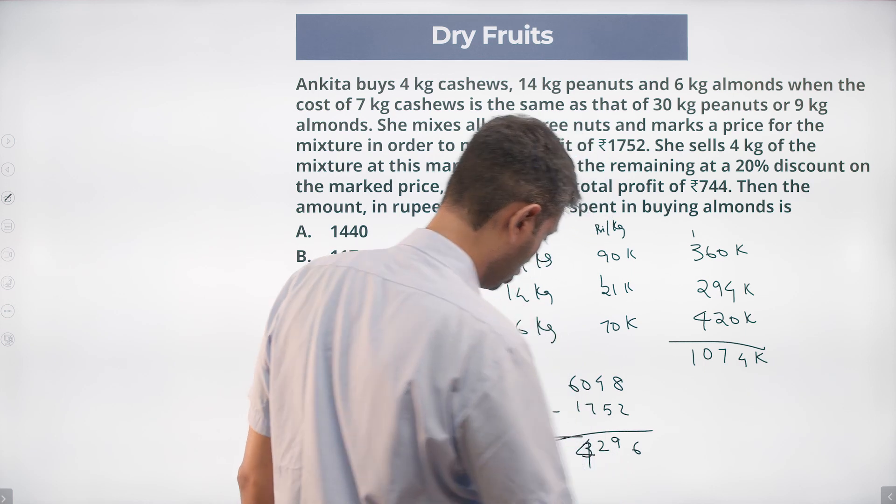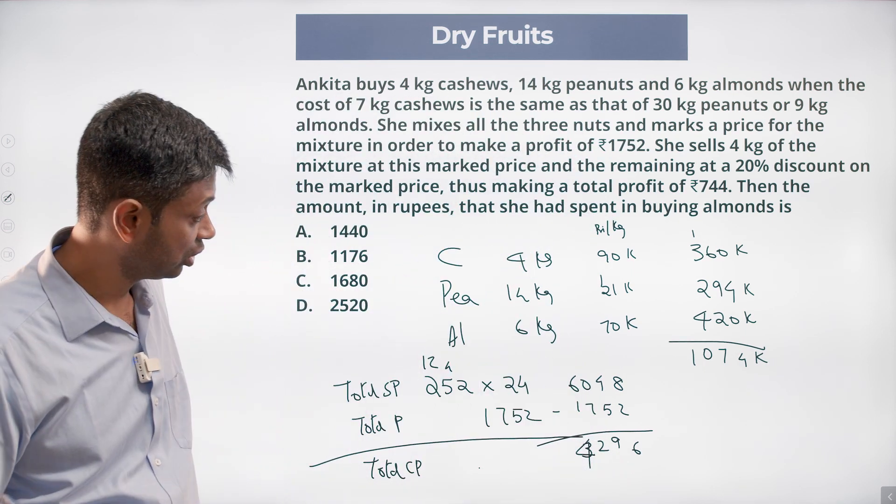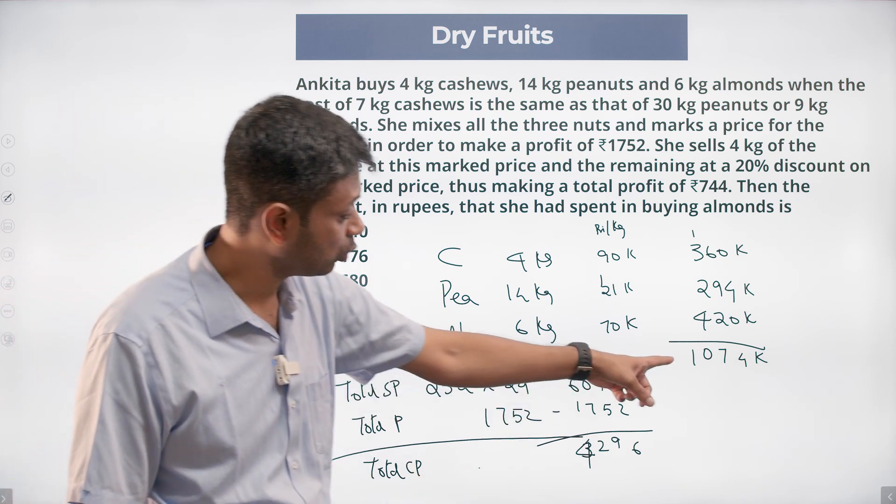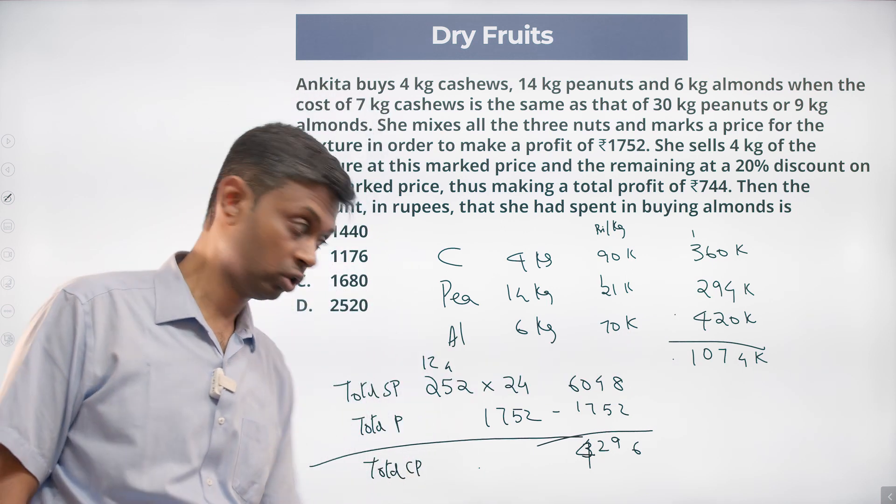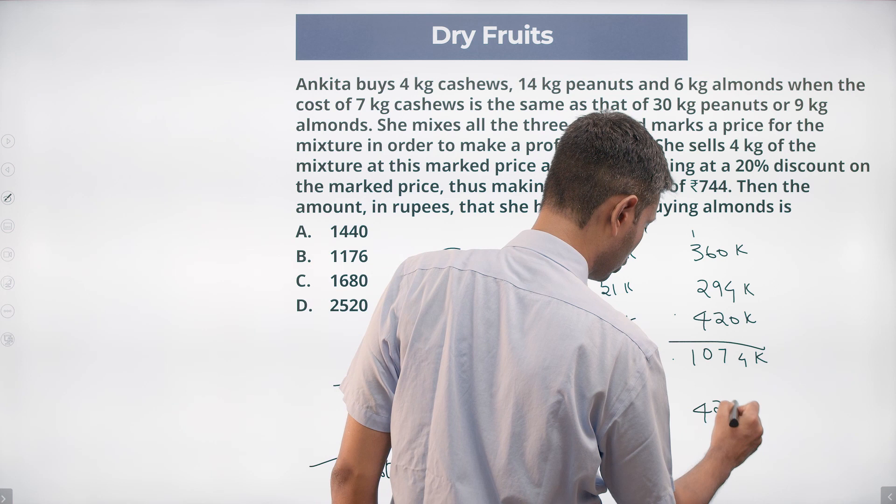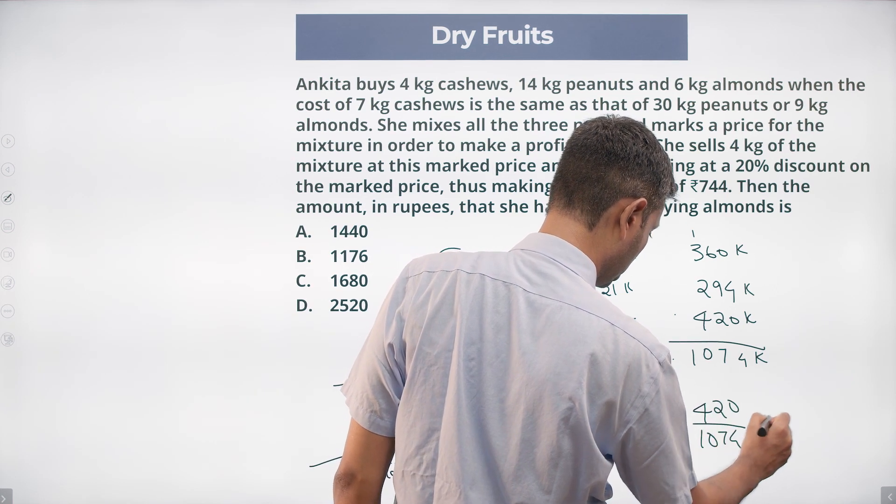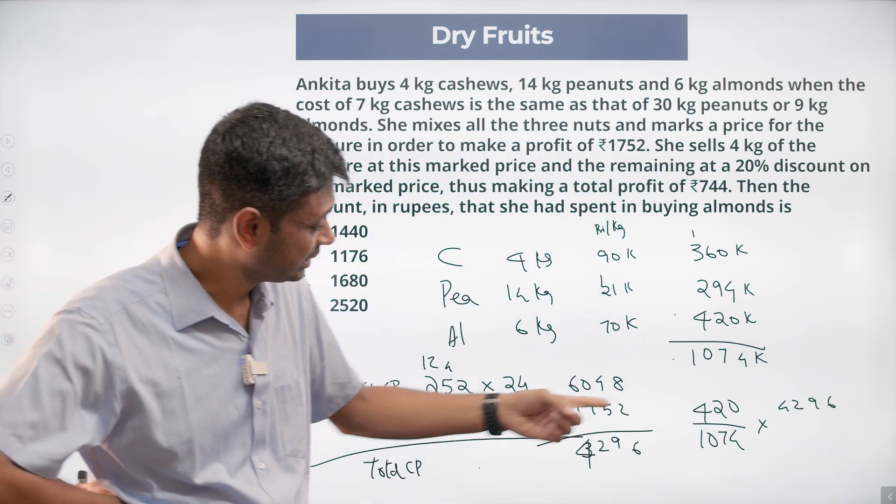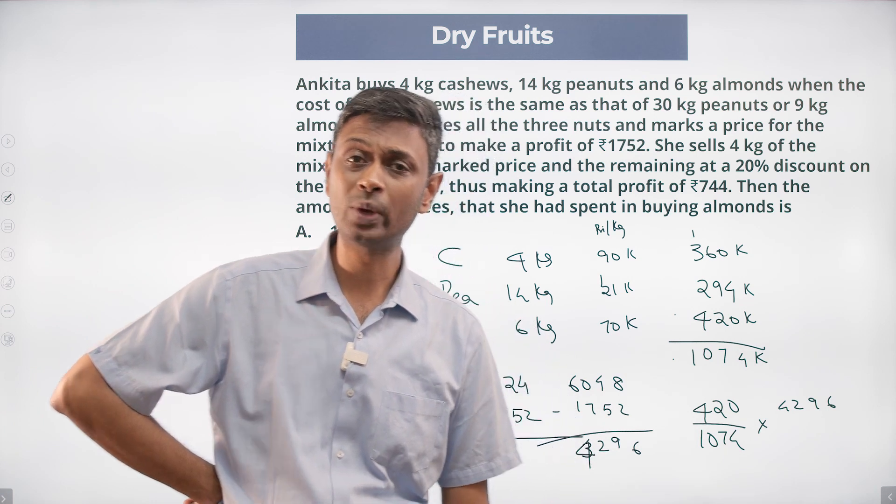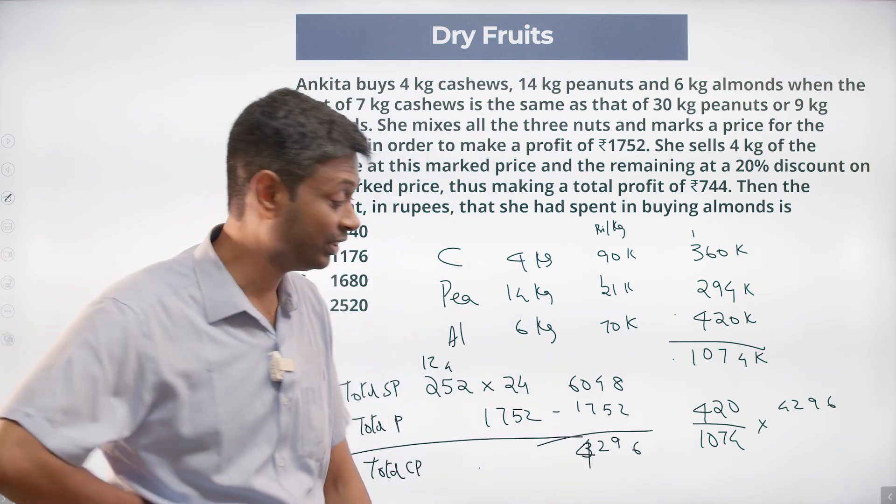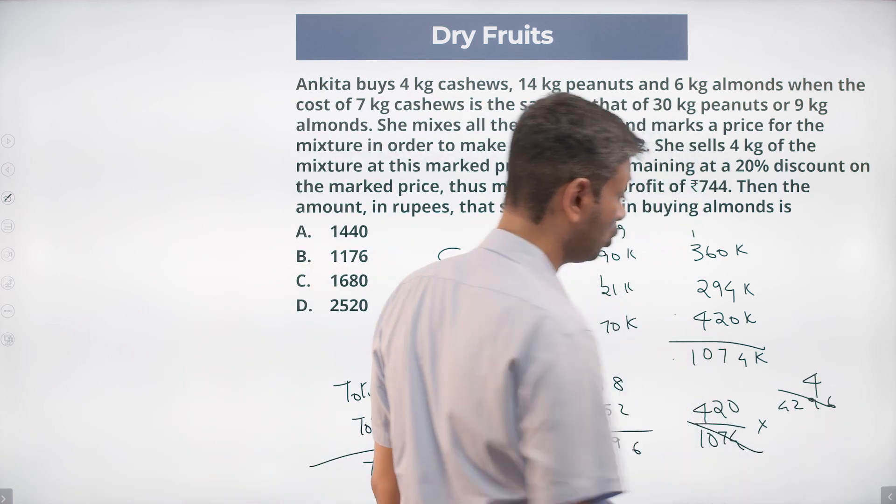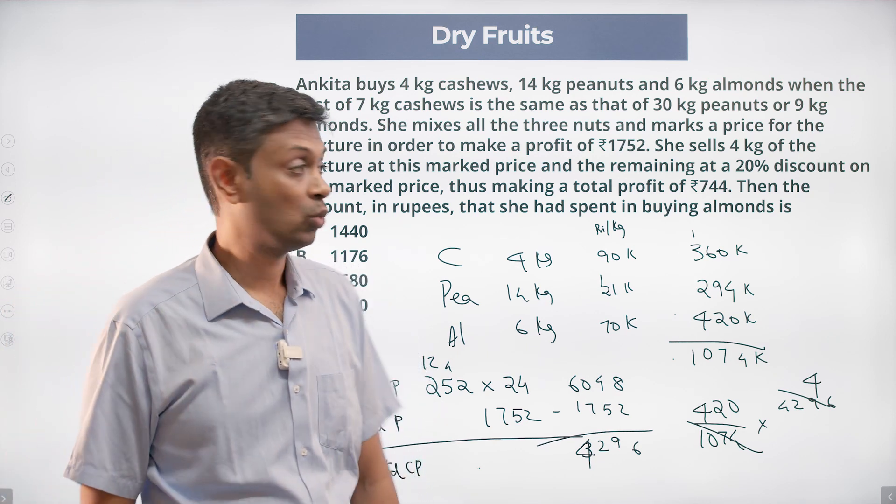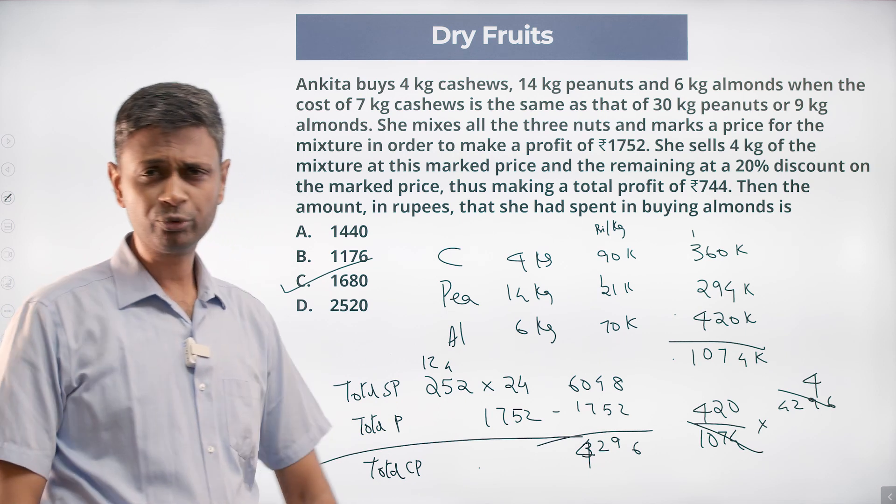And that is 1074K. We need to find 420K. Cost of almonds is 420 by 1074 into 4296. 74 into 4, 70 into 4 is 280 plus 16, 296, lovely. This by this is 4. 420 by 4 is, 8, 40 into 21, 6, 80. Finally we get lucky, 1680. Absolutely painful.